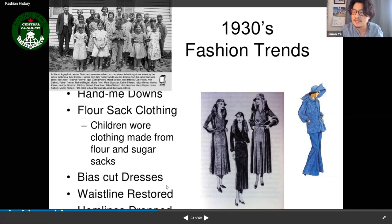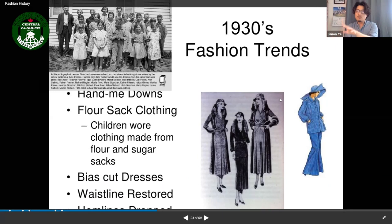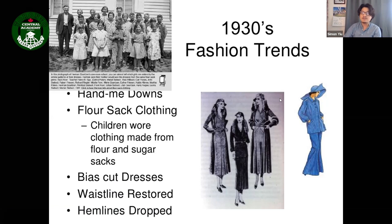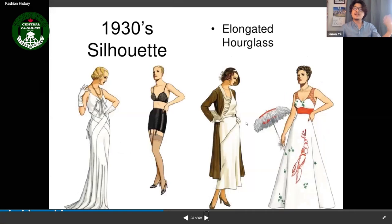For those who could afford better clothing, there were bias-cut dresses with improved cuts. The waistline was restored — unlike the 1920s tubular shape, the 1930s brought the waist back. Hemlines dropped again, almost to ankle length, returning from the shorter 1920s styles.